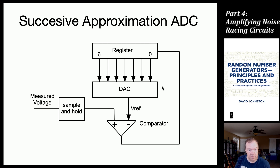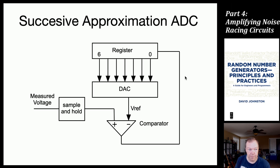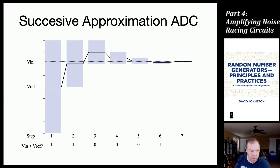You can probably see where this is going. If we want to make an entropy source that's detecting noise, why not just keep going to the right, keep dividing, changing the reference voltage, and generating more and more bits? Sooner or later all those bits will be noisy — and that's just what we want: noisy, random bits.